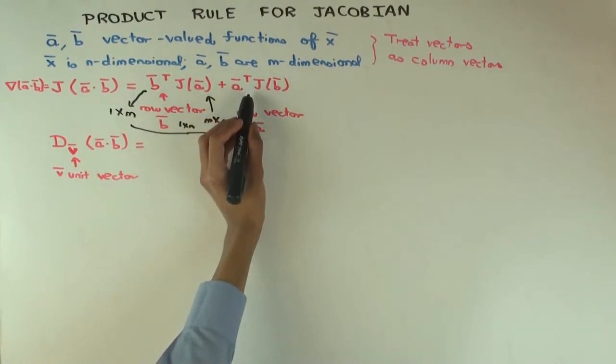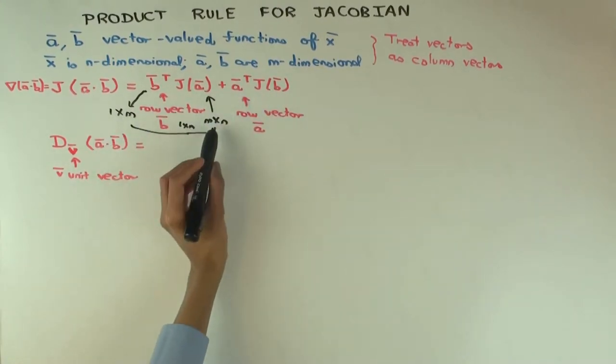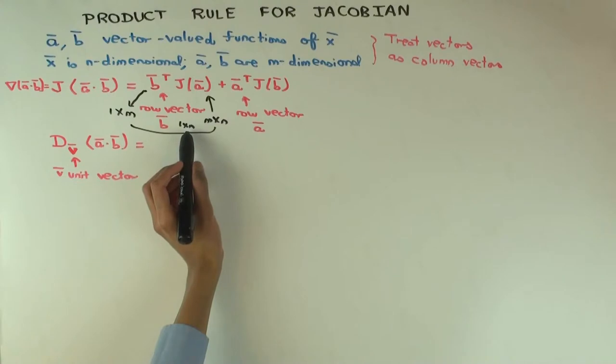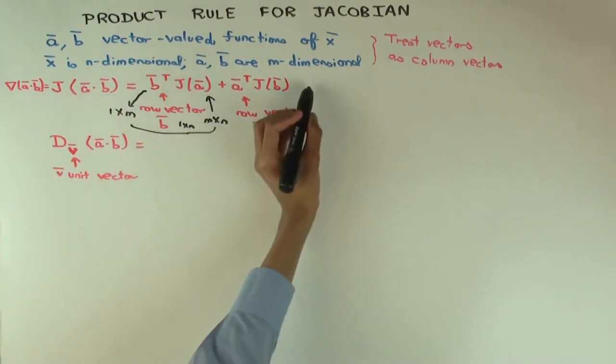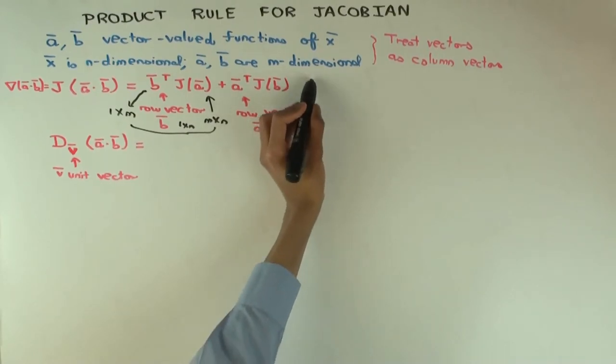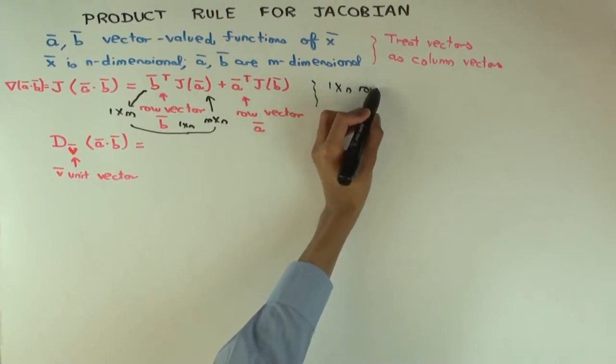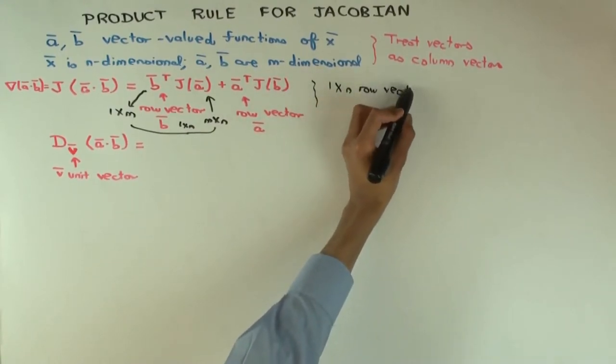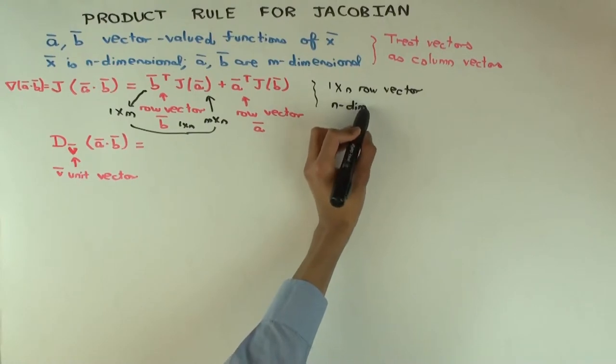What about this? So a transpose is the same, 1 by m, and J_b is m by n, so the product is 1 by n. So you get that this is actually a row vector, so you get a 1 by n row vector. Which if you just think of it as a vector, that's just an n dimensional vector.